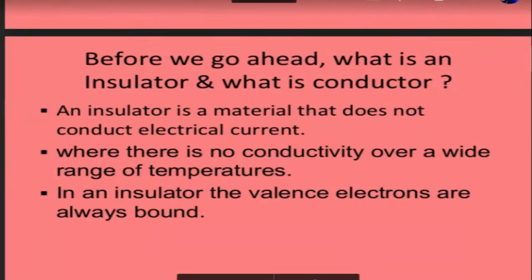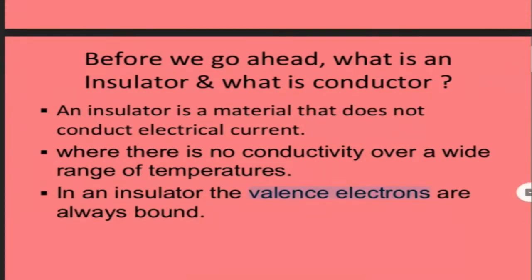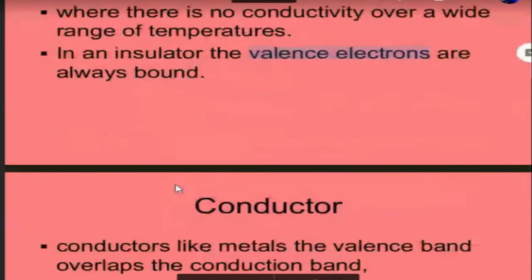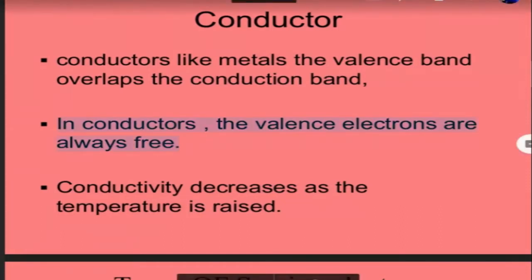An insulator is a material that does not conduct electric current — no conductivity across a wide range of temperature. The important concept here is valence electrons: the insulator stops the valence electrons from moving. For a conductor, it allows those valence electrons to remain free, and these free electrons move — that is the key difference.